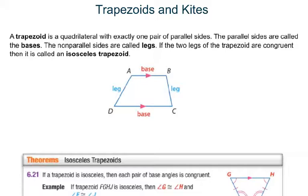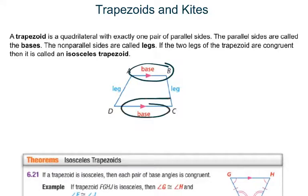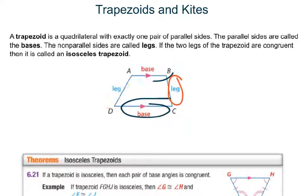These are not parallelograms. First, let's talk about trapezoids. A trapezoid is a quadrilateral with exactly one pair of parallel sides. The parallel sides are called the bases, and the two sides that are not parallel are called the legs. The vocabulary here is important.